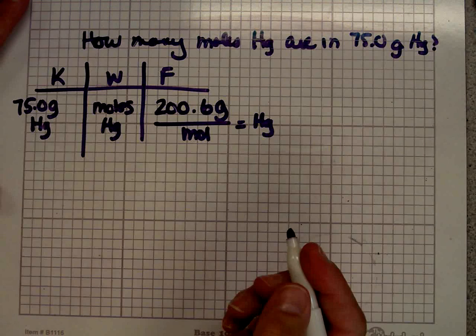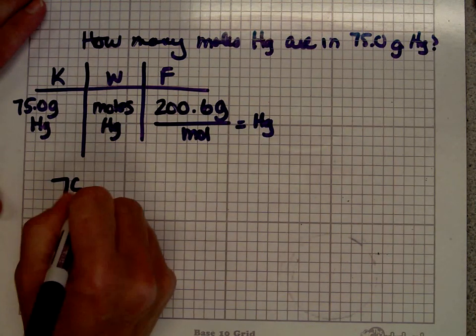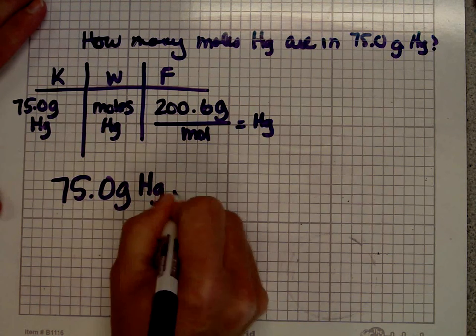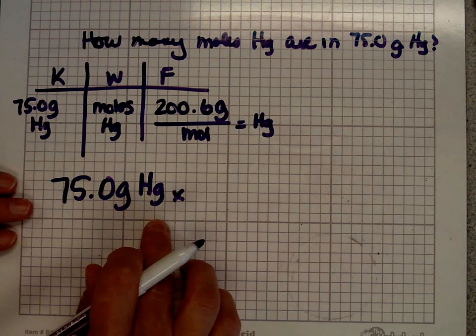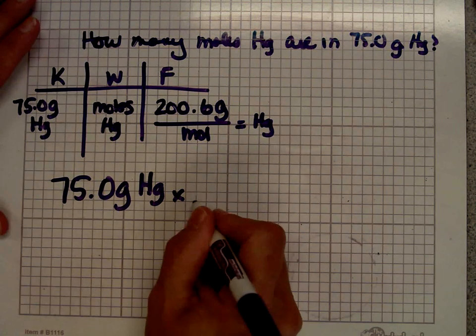So that's all I need. I always start with what I know. So I know I have 75.0 grams of mercury. Folks, you may not want to write grams of mercury, but I'm going to tell you what. That is really the key to chemistry. If you don't like writing it, get over it and start writing it because it's going to make a huge difference to you.